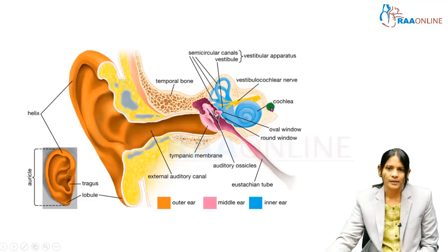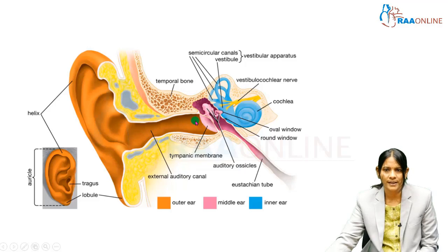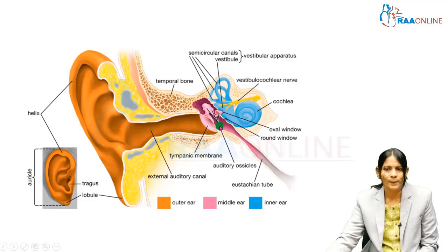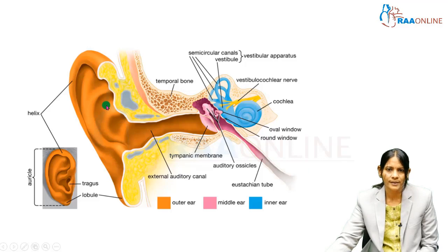These are the three parts of the ear. In this session, we are going to see the external ear, the external acoustic meatus or the external auditory meatus, the tympanic membrane, which serves as a partition between the external ear and the middle ear, and the auditory tube or the Eustachian tube, which is a separate structure but opens into the middle ear.